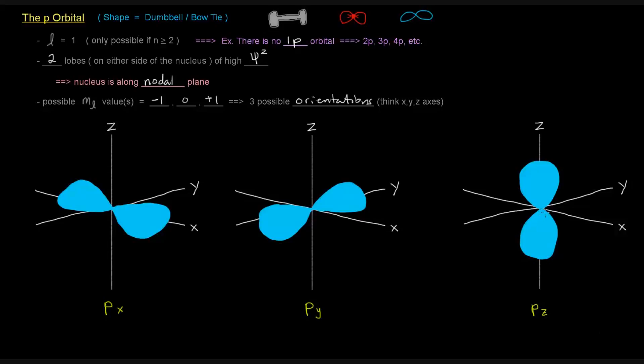And in the case of the z, or the pz orbital, where it's along the z-axis, the xy plane is the nodal plane.